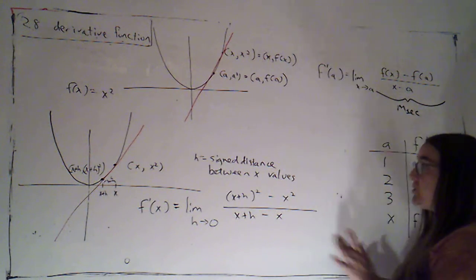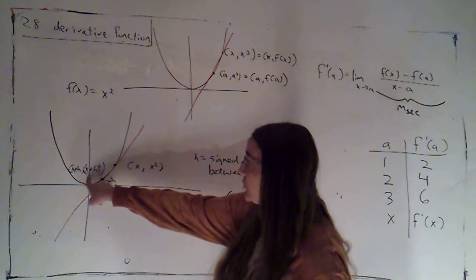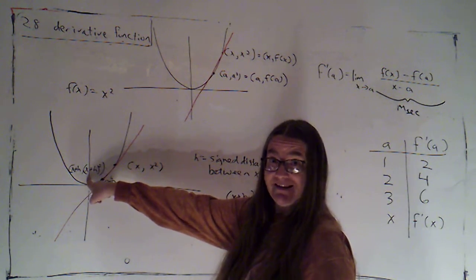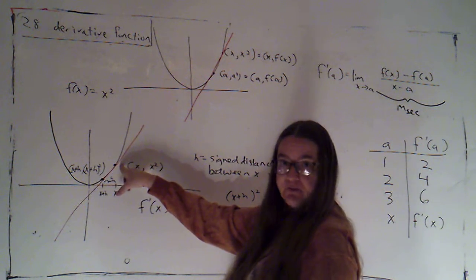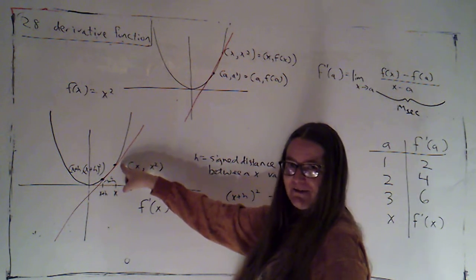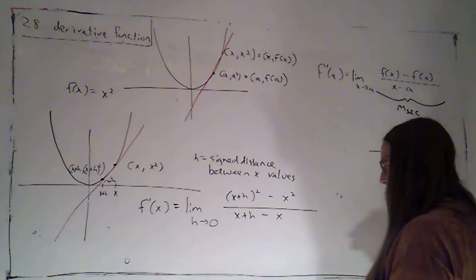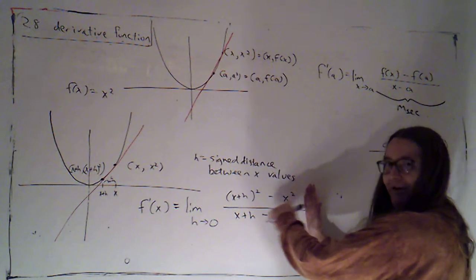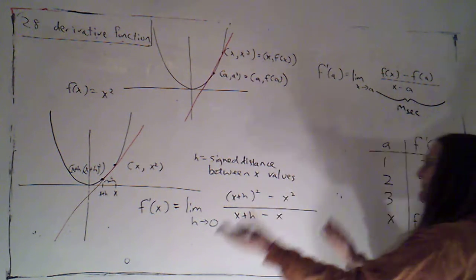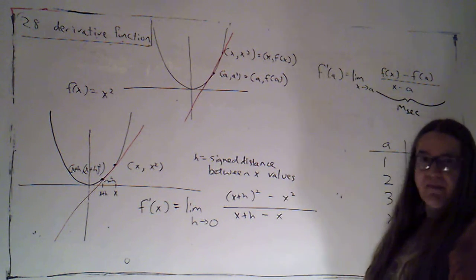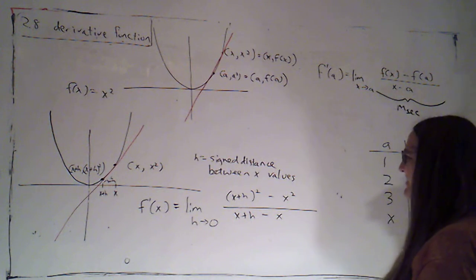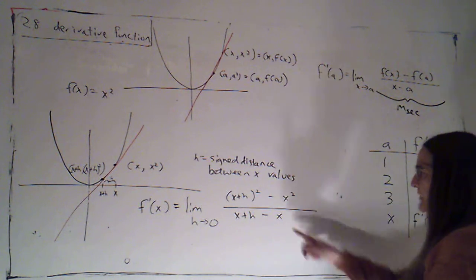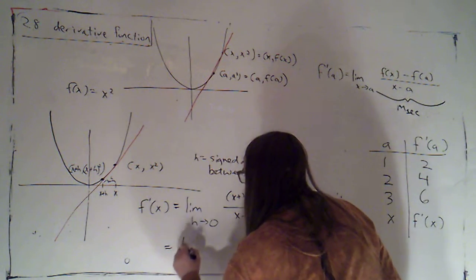Now, I generally like to do my subtraction so that I start with the more complicated point and subtract the simpler point, which is the point of tangency. That's for two reasons. One, that puts the negative sign in front of the simpler expression so that I'm less likely to have to worry about distributing a negative, although sometimes I will still have to do that.